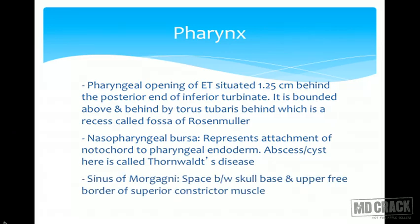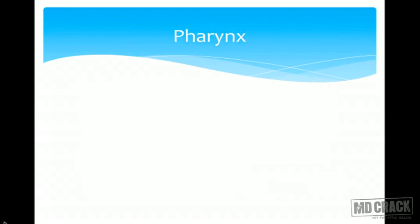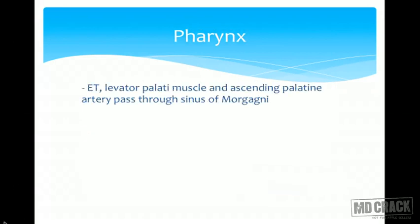The sinus of Morgagni is a space between the skull base and the upper free border of the superior constrictor muscle. Three structures pass through it: the Eustachian tube, the levator palati muscle, and the ascending palatine artery. An MCQ may be framed using an 'except' type question about these structures.